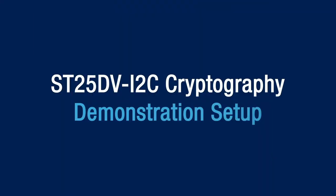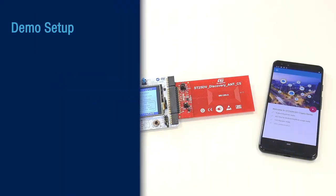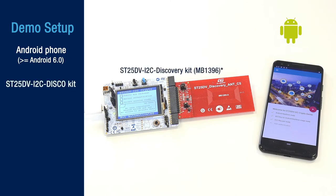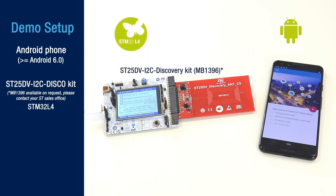To execute this demo, you will need the following material: an Android phone with at least Android 6.0, and an ST25DV I2C Discovery Kit representing the IoT device. This board is based on a motherboard equipped with an STM32L4 and a daughter board featuring an ST25DV04K NFC tag.